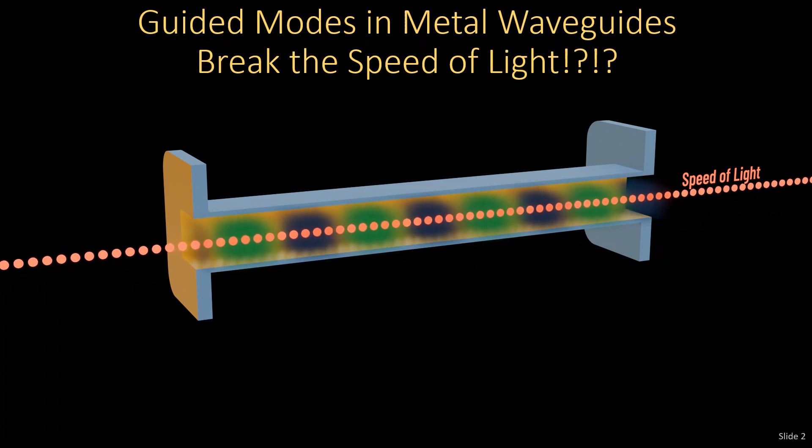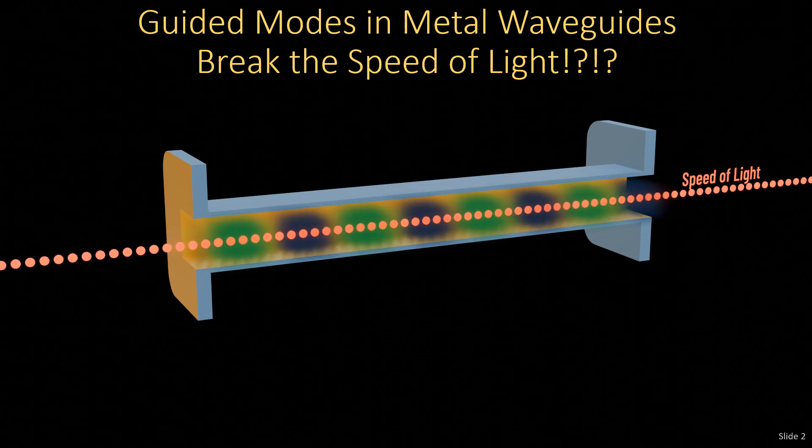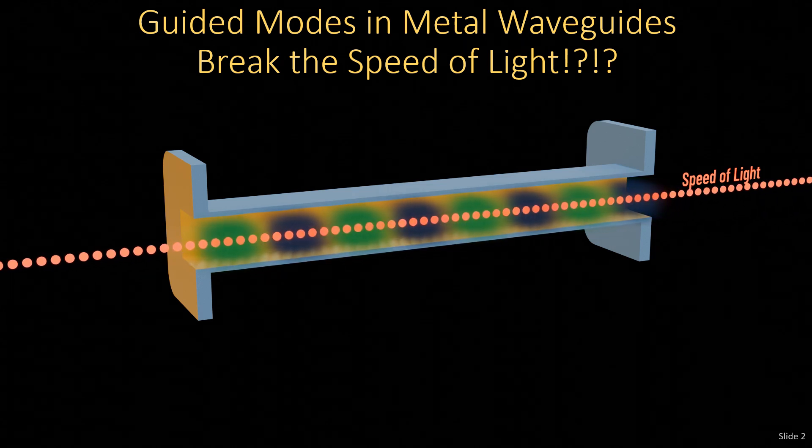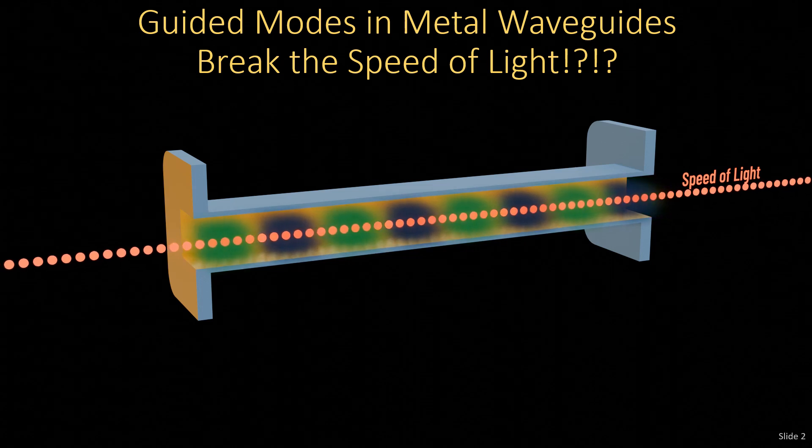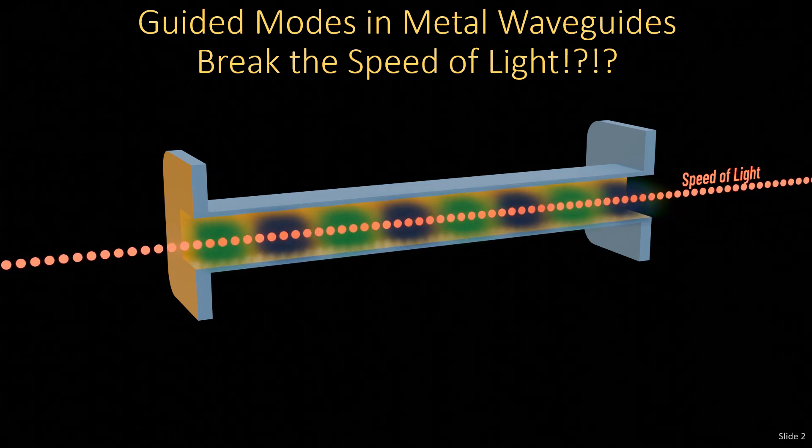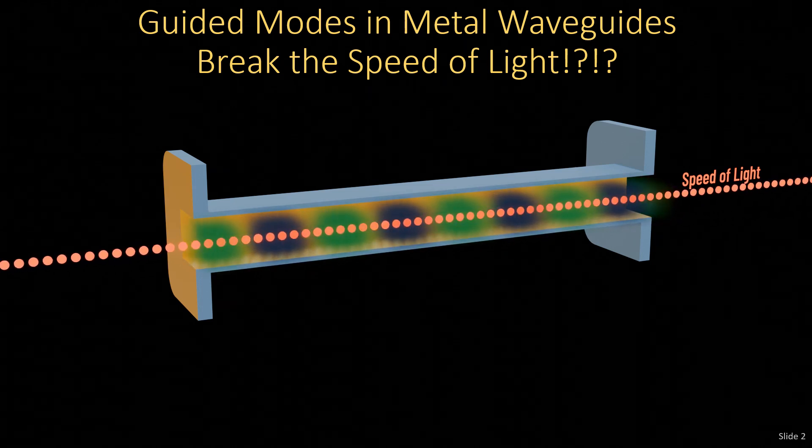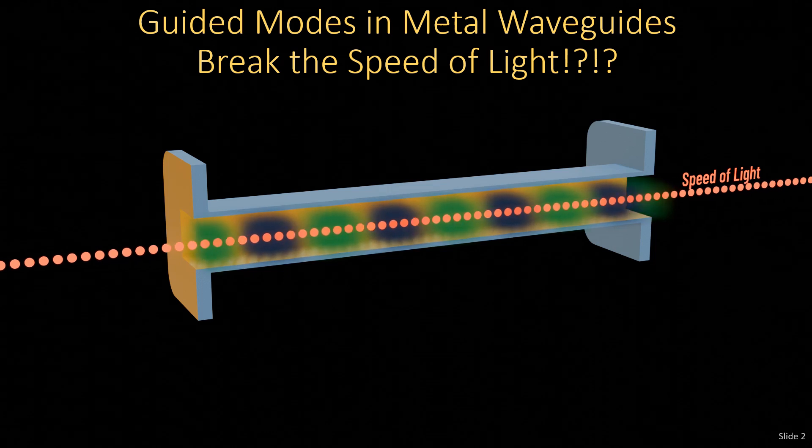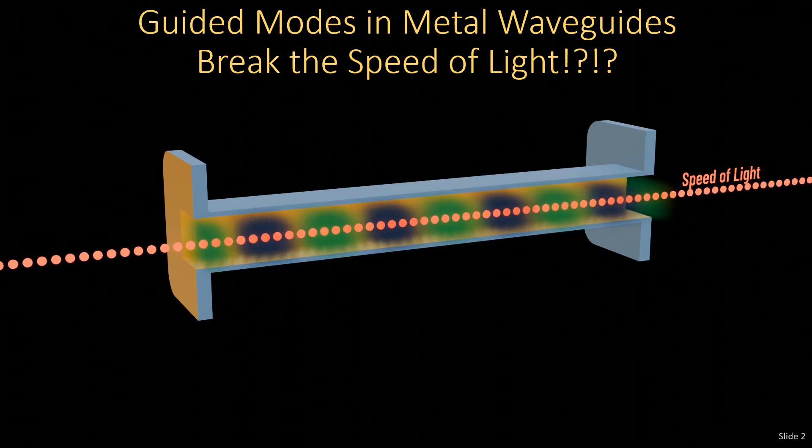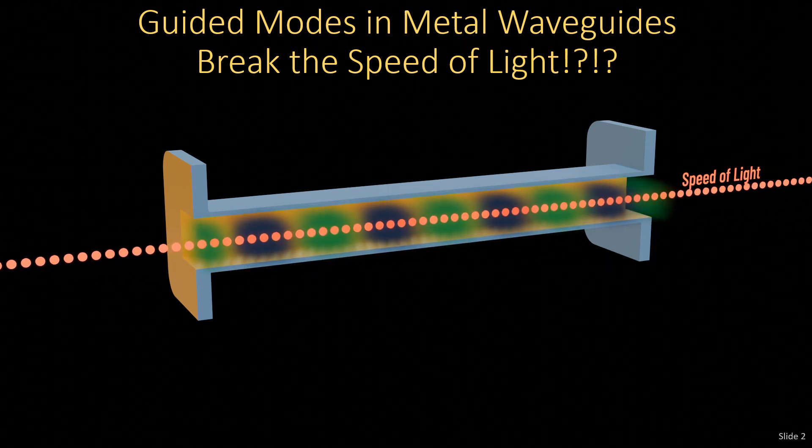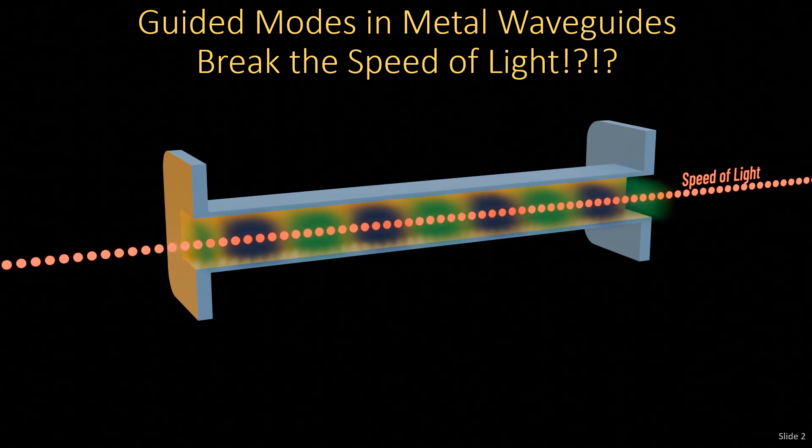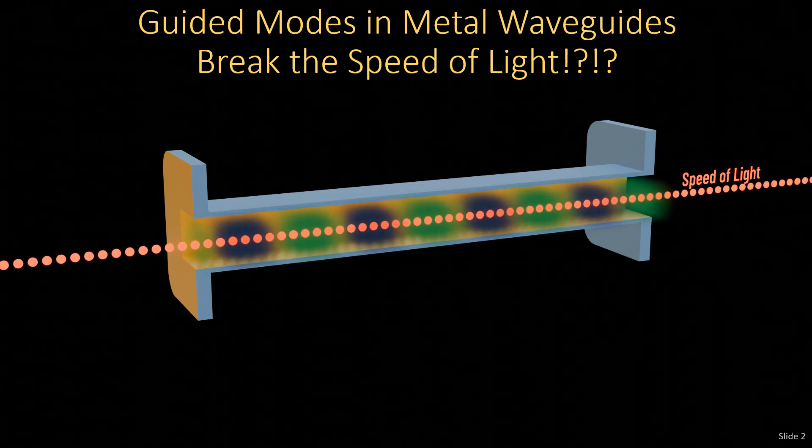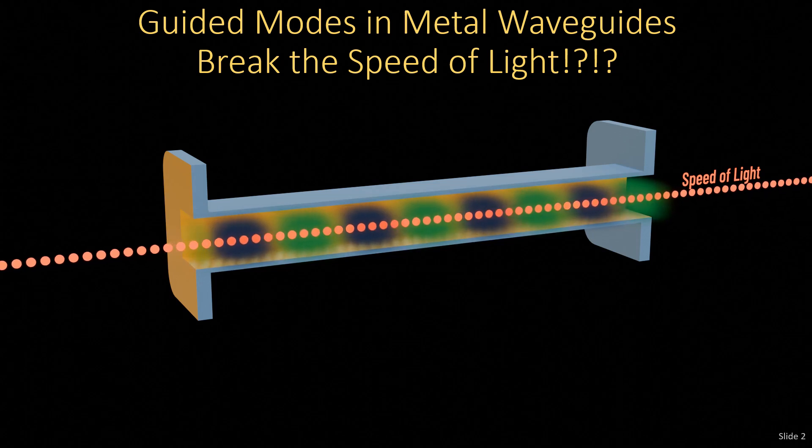Many years ago, I was in a business meeting, and this is actually before I really had studied electromagnetics in any kind of depth. I had the typical electrical engineering background, but had not studied it in depth. We were sitting around before this meeting, and somebody just matter-of-factly mentioned that the modes in a metal waveguide travel faster than the speed of light. Not knowing any different or how to think about that, I just sort of filed that away in my brain as unusual.